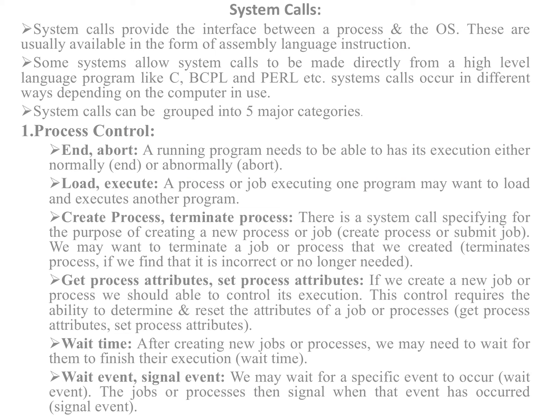Next is get process attributes and set process attributes. If you create a new job or process, we should be able to control its execution. This requires the ability to determine and reset the attributes for the job or process. Next is wait time — after creating a new job or process we may need to wait for them to finish their executions. In multiprogramming, more than one program resides in primary memory, so some processes must wait in RAM, and the wait time system call is used for that purpose.